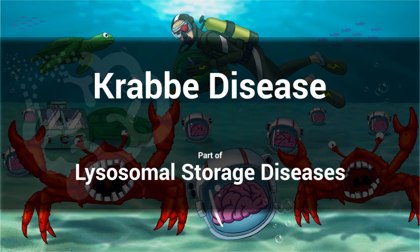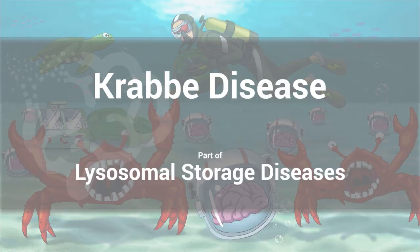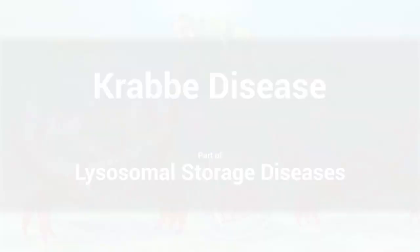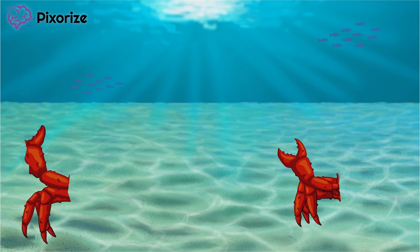All aboard, we're off to the bottom of the ocean this time. Since this scene is about Krabbe disease, our scene takes place underneath the sea where the main characters are — you guessed it — crabs. This scene is about king crabs who have gone absolutely psycho. As for why these crabs are going crazy, we'll have to wait to find out.